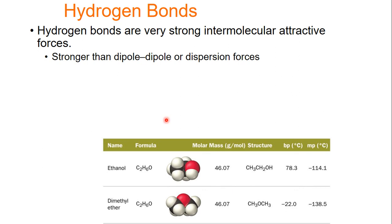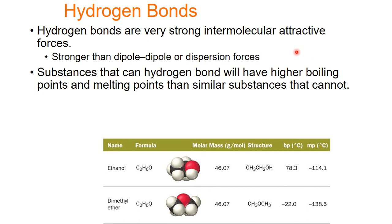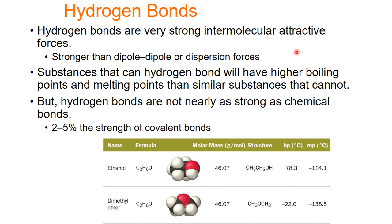Hydrogen bonds are very strong intermolecular forces. They're stronger than your dipole-dipole or dispersion forces. Here in this graph, I'm showing ethanol, which can have hydrogen bonds, and dimethyl ether, which only has polar interactions. Same molar mass, but ethanol has a much higher boiling point and melting point because of stronger intermolecular forces thanks to that hydrogen bond. If you can hydrogen bond, you have a higher boiling point and melting point. But keep in mind, hydrogen bonds and all intermolecular forces are much weaker than covalent bonds. In general, hydrogen bonds only have roughly 2 to 5% of the strength of your covalent bonds.